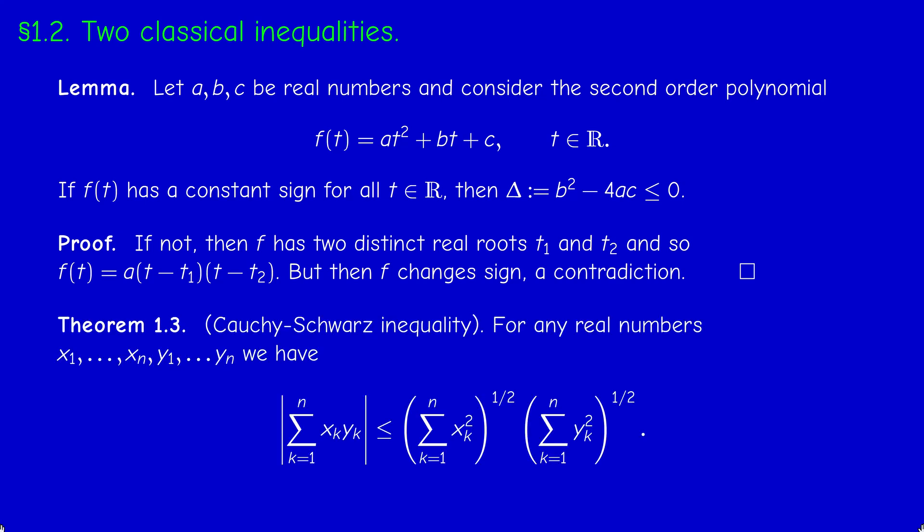Now we move to Cauchy-Schwarz. If we have two n real numbers of any sign, then the sum of their products in absolute value is less than the sum of the squares to the power one-half of the first n times the same thing for the other n. There is a geometric interpretation that I would give after proving this algebraic inequality, which is a really fundamental inequality in all mathematics.